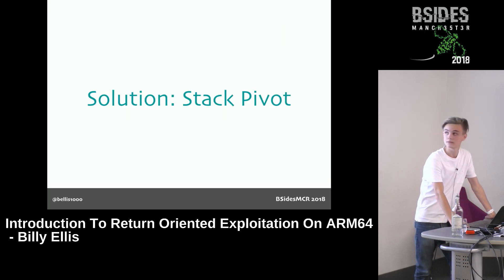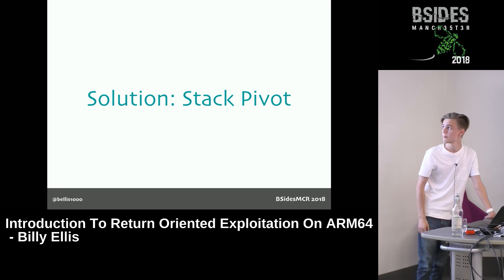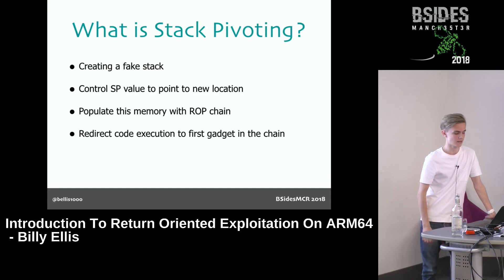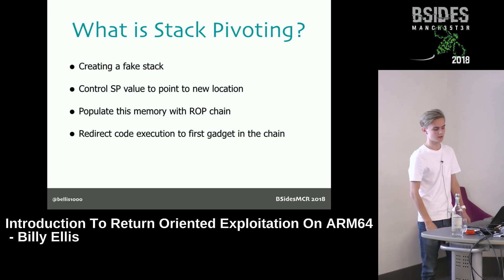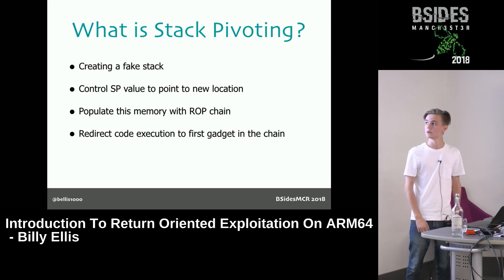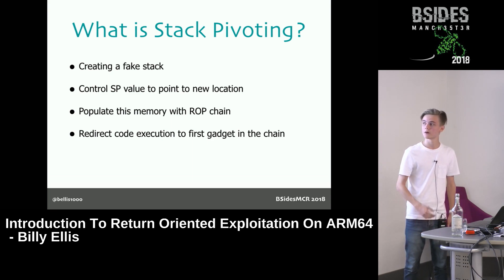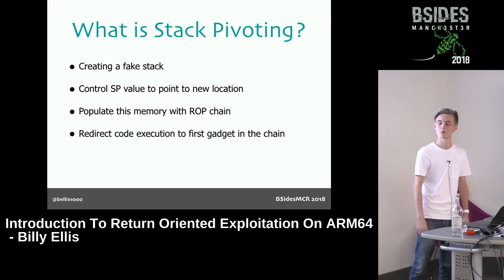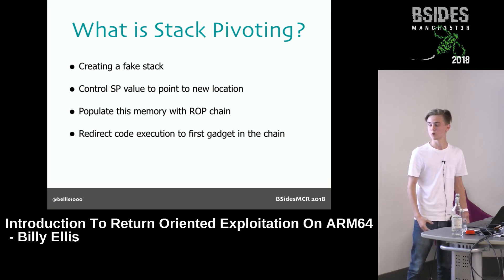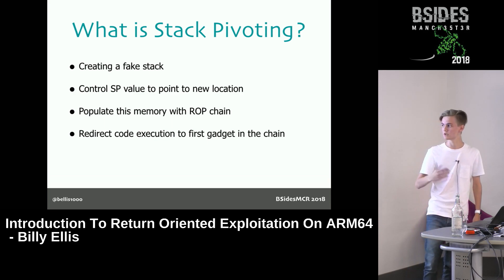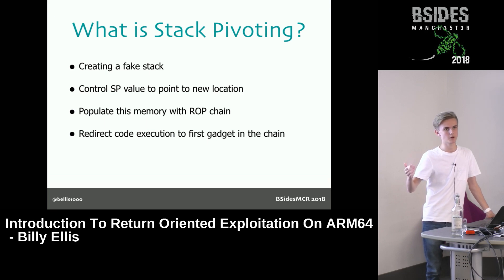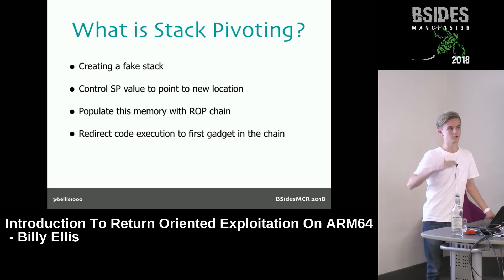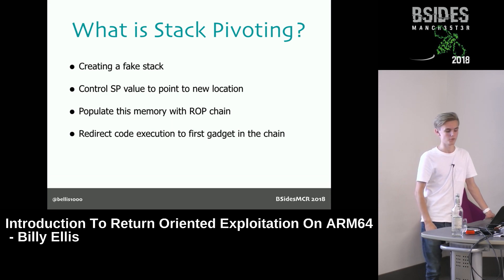The solution is a technique known as stack pivoting, which allows you to create your own fake stack with data you fully control. You do this by modifying the stack pointer register and making it point to a new location in memory. That memory gets populated with your gadget addresses, and then you redirect code execution to your first gadget. When it returns, instead of going to the real stack, it uses your fake stack which has all the data you control — so it goes through your gadget chain just as normal.